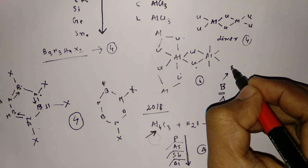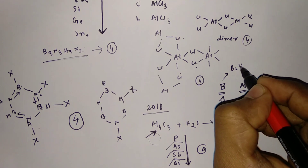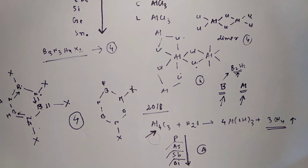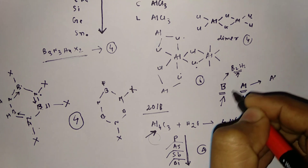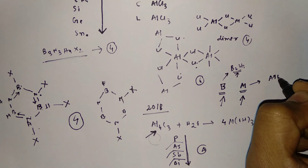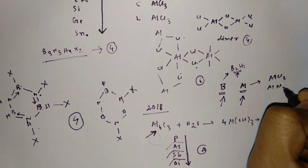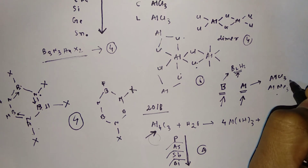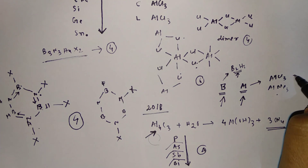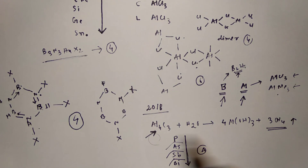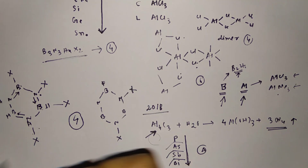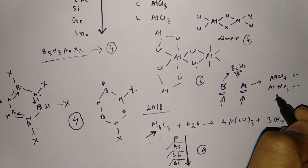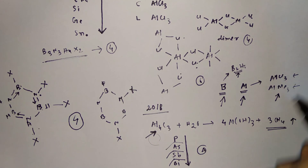You have to read the B2H6 system — its structure and reactivity. From aluminium compounds: AlCl3, AlMe3, and their structures. If they form crystalline forms, you have to remember the coordination numbers. This is very important.